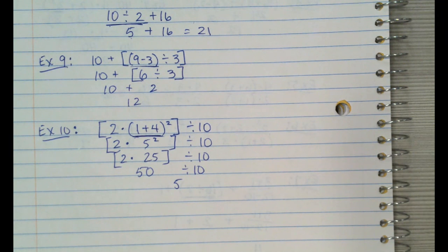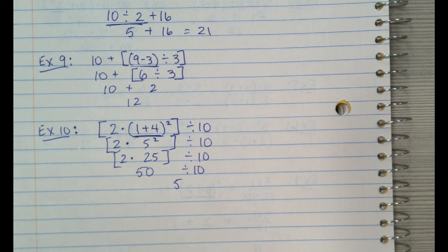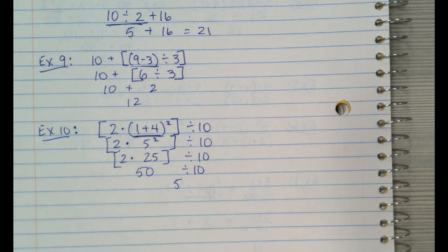Alright guys, take the next worksheet on order of operations slow — one step at a time. Remember to keep showing your work, check yourself with the calculator, but show me all of your steps. See y'all later.